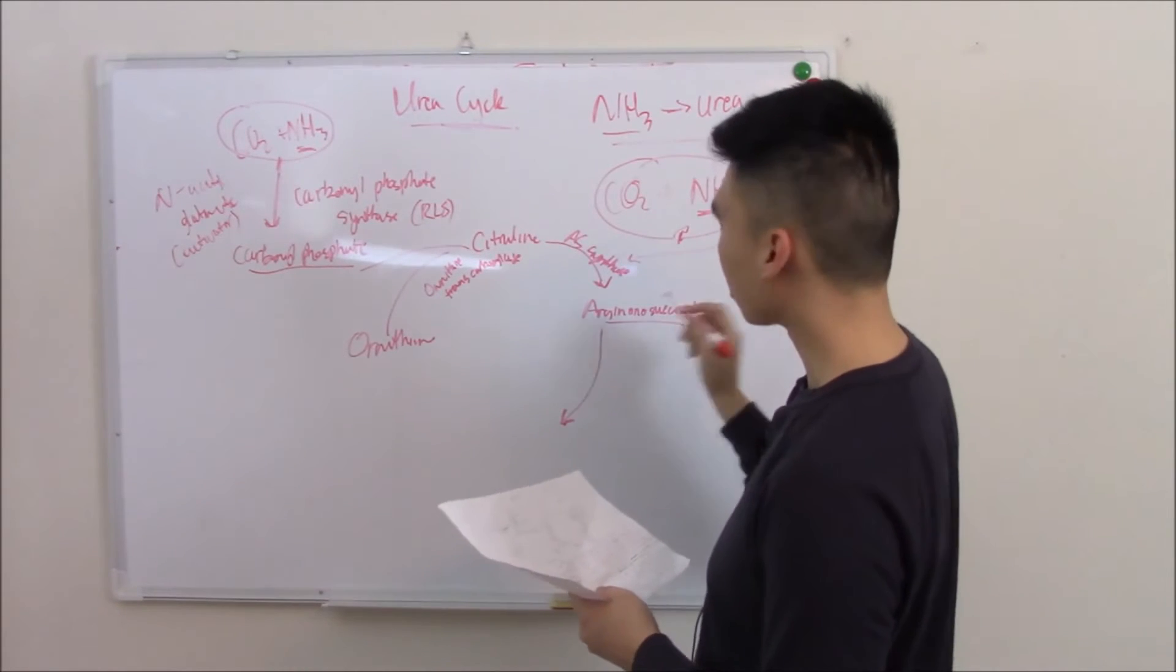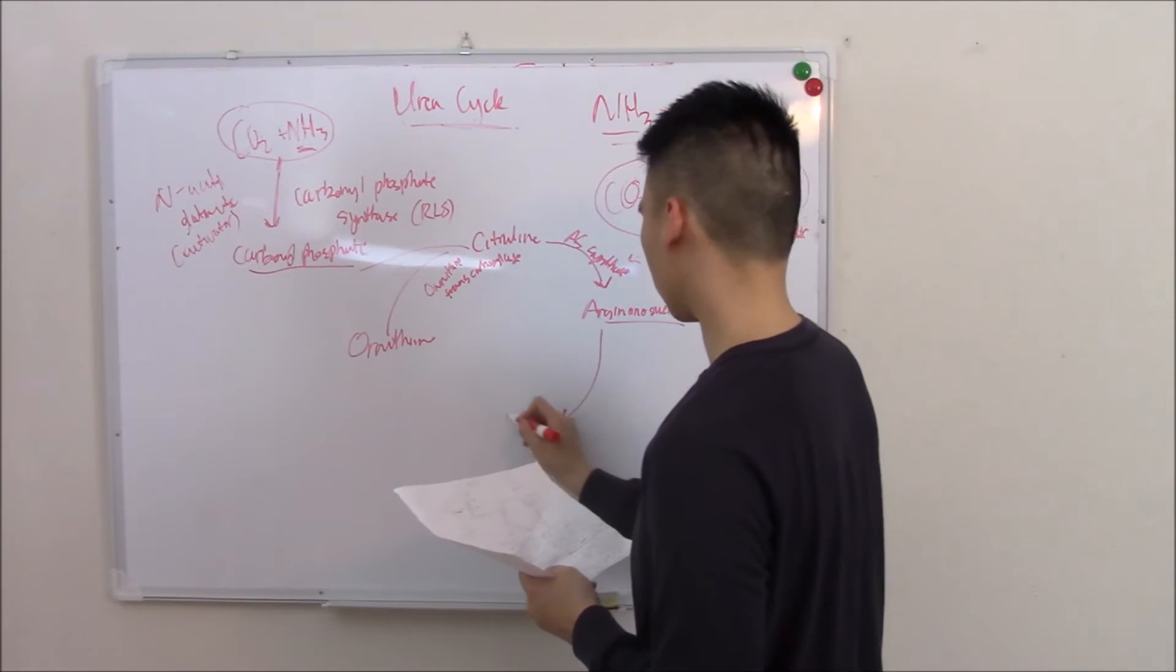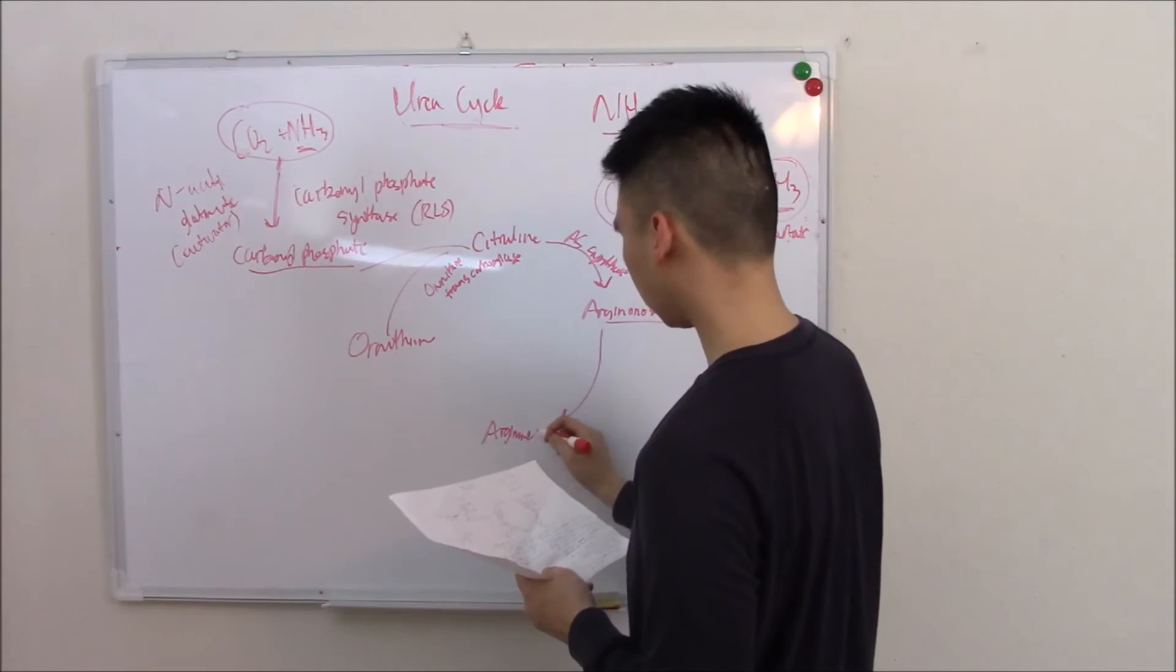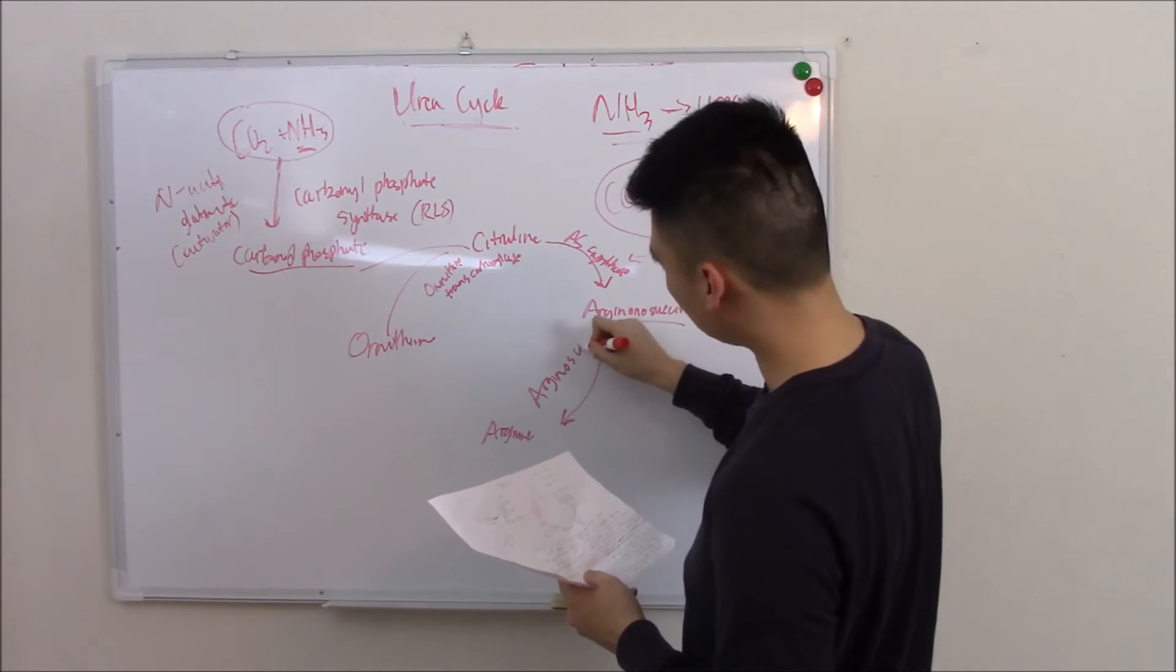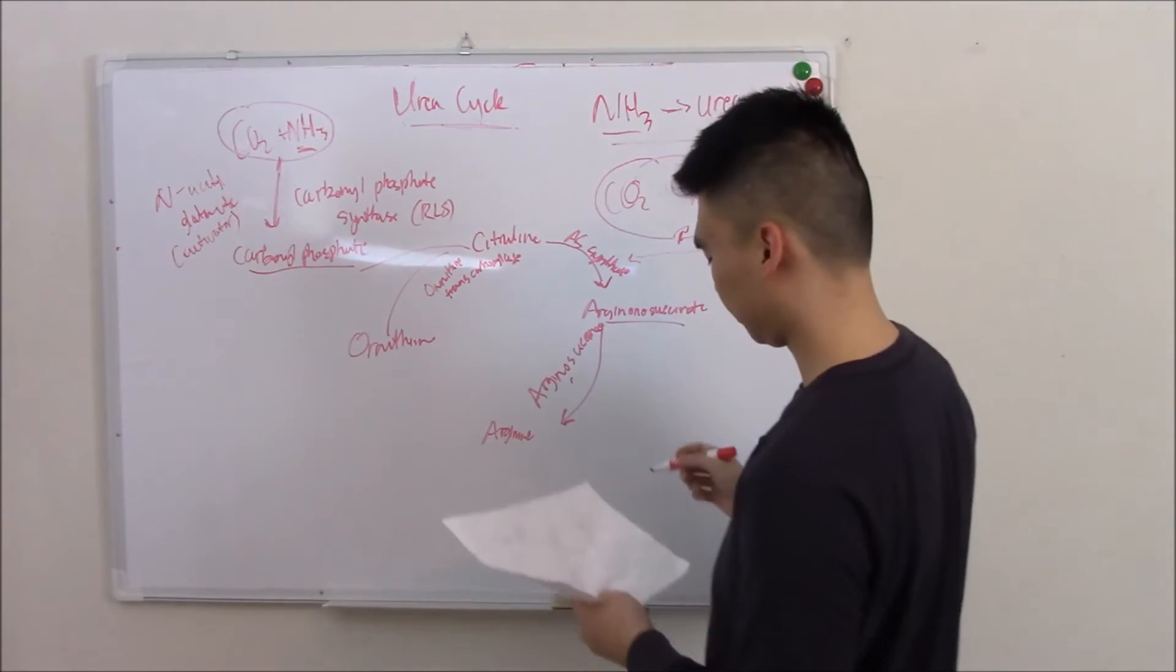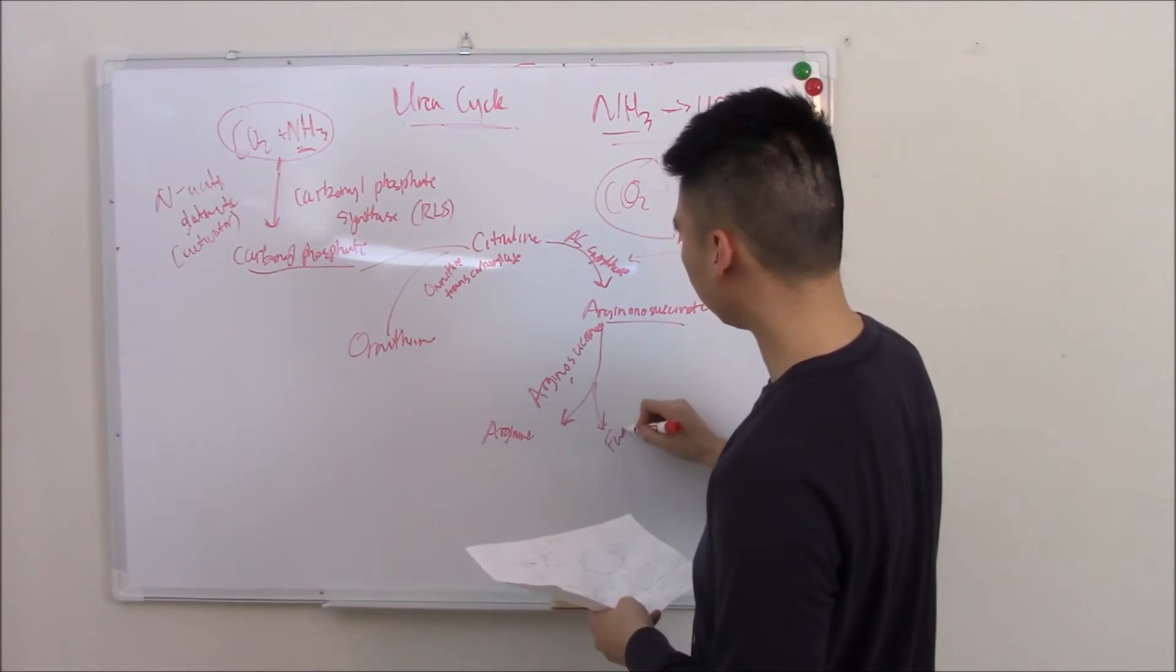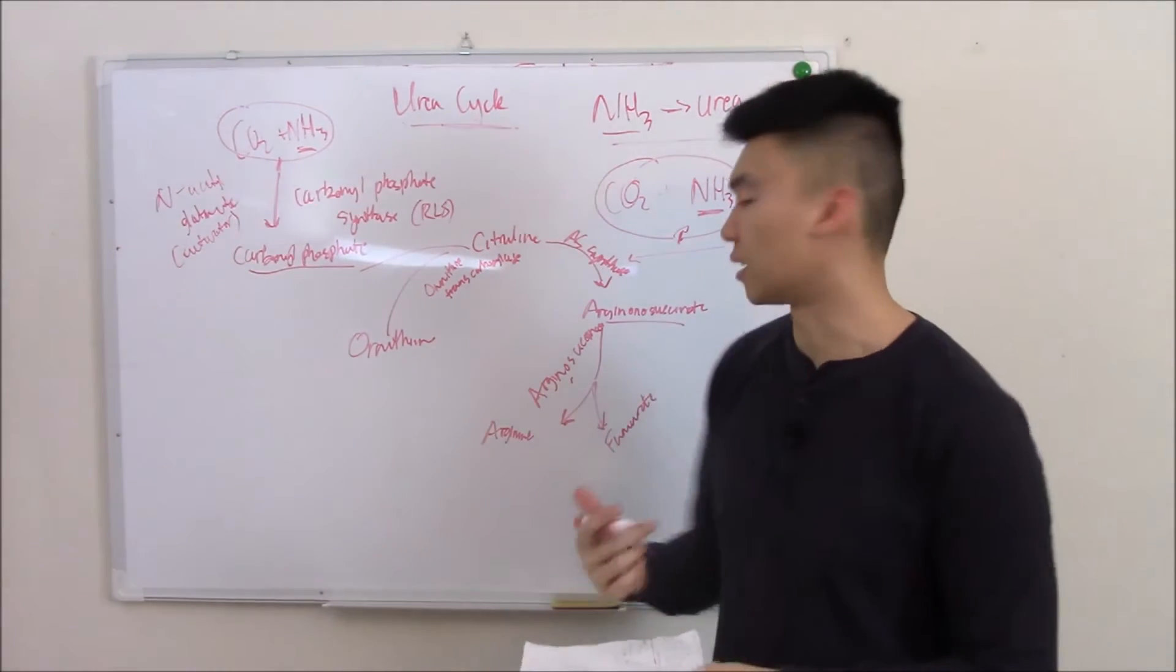Now argininosuccinate becomes arginine via argininosuccinase, and a byproduct of this reaction you make fumarate, which you know is part of your TCA cycle.